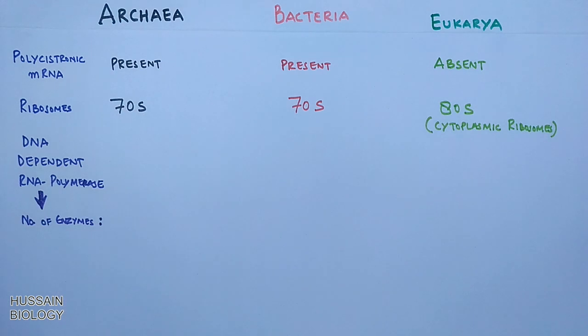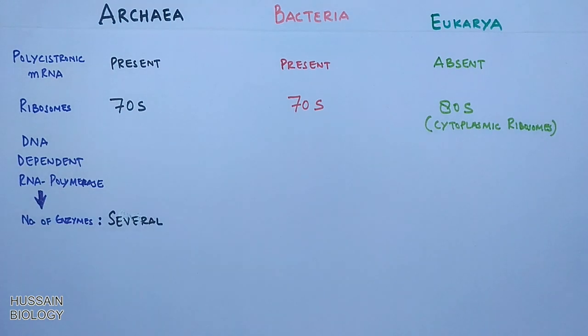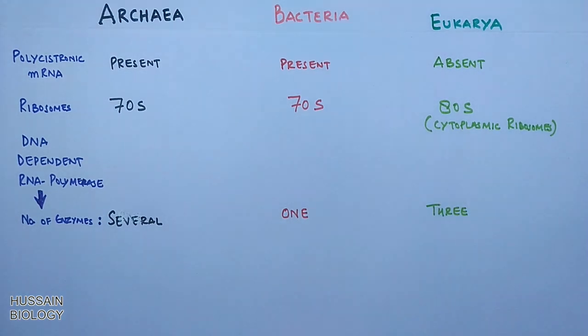Finally, we compare DNA-dependent RNA polymerase. In Archaea, there are several enzymes. In Bacteria, there is only one enzyme. In Eukarya, there are three of these enzymes.